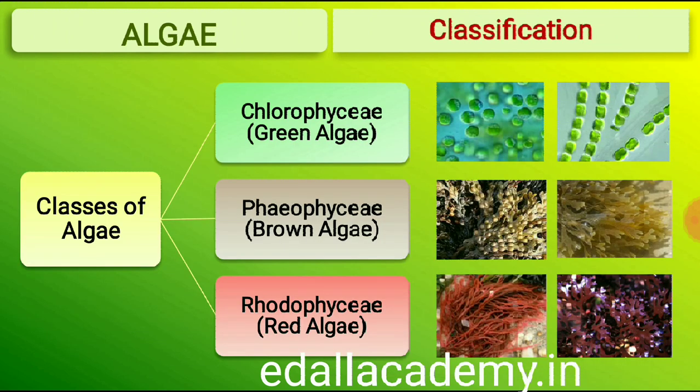The algae are divided into three main classes: Chlorophyceae, Phaeophyceae and Rhodophyceae.